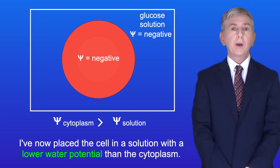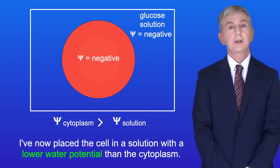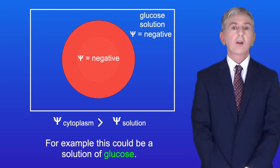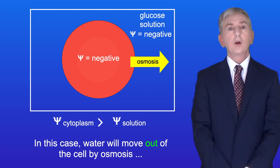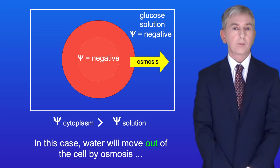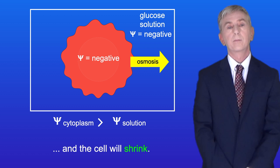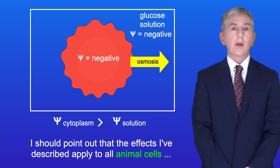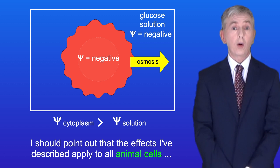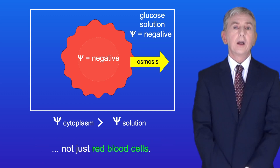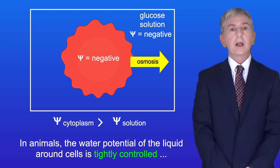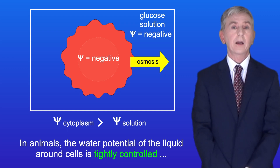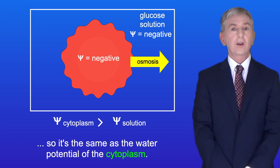If we place the cell in a solution with a lower water potential than the cytoplasm — for example a solution of glucose — water will move out of the cell by osmosis and the cell will shrink. These effects apply to all animal cells, not just red blood cells. In animals, the water potential of the liquid around cells is tightly controlled so it's the same as the water potential of the cytoplasm.